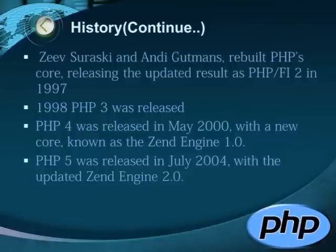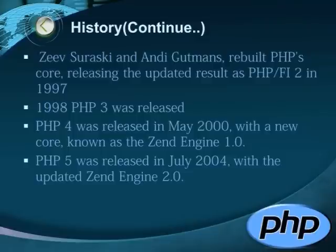PHP 4 was released in May 2000 with a new core known as the Zend Engine 1.0. PHP 4 featured improved speed and reliability over PHP 3. In terms of features, PHP 4 added references, boolean type, output buffering, many new array functions, expanded object-oriented programming, inclusion of the PCRE library, and more. Maintenance releases of PHP 4 are still available, primarily for security updates.